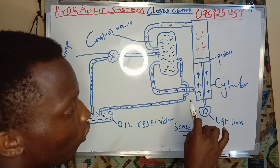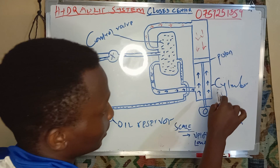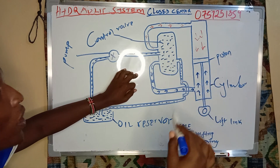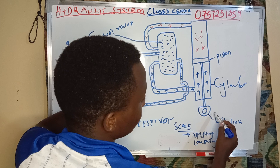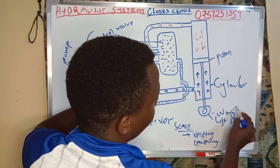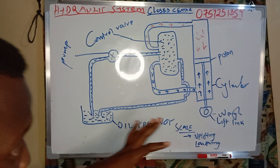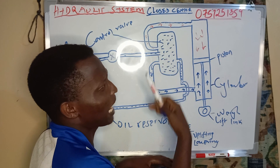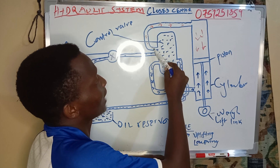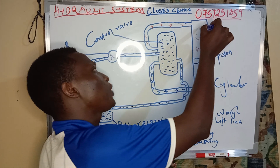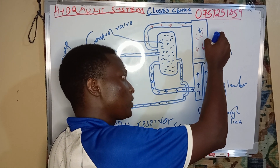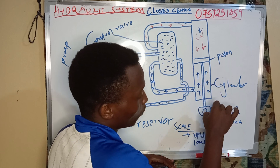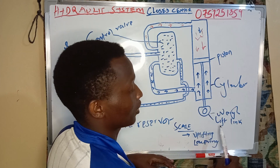That will come out of where the oil was directed to get into the cylinder. So after the oil gets into the control valve — assume I want to lower my load here on the lift link, because this is where you place your load — the oil at high pressure will get into this channel and will force the piston to move downwards, making this point move downwards, and that will cause the lowering of the load.